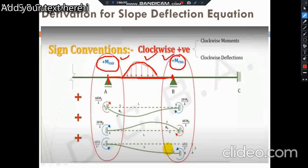In the second step, if we remove the fixity at A — with both A and B initially assumed fixed — then to maintain fixity at B we apply a moment of 4EIθA/L. The moment transferred to end B will be 2EIθA/L. When the fixity at B is released and fixity at A is maintained, the moment is half — this moment is clockwise at both sides.